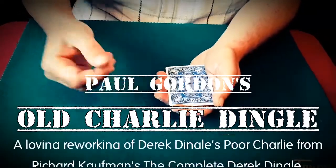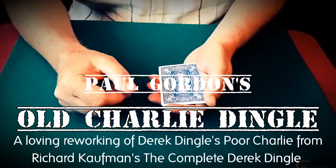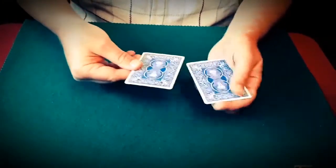This is the tale of old Charlie Dingle. Charlie Dingle was a rotten card cheat, a rotten magician, and this is the hand of cards he once had.